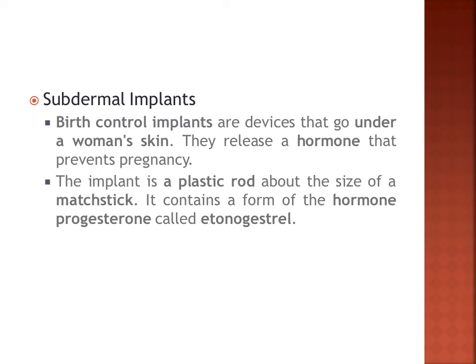Next we have subdermal implants. Birth control implants are devices placed under a woman's skin. The implant is a plastic rod about the size of a matchstick, placed under the skin, and it releases a hormone called etonogestrel — a form of progesterone — which prevents the woman from getting pregnant.